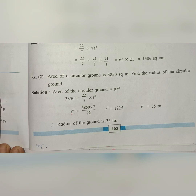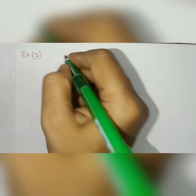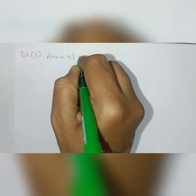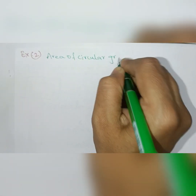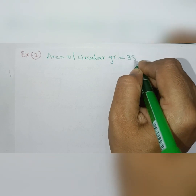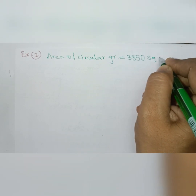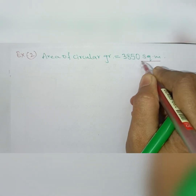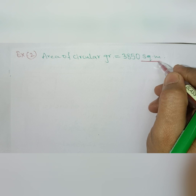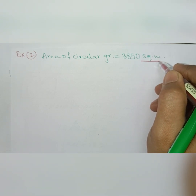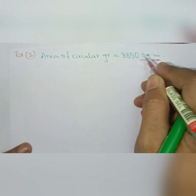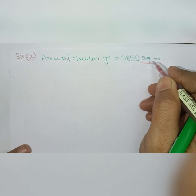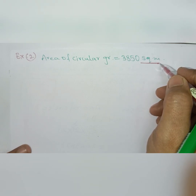We will first find r squared, then take the square root to get r. Never leave the answer as r squared — taking the square root is compulsory, because we are asked for r, not r squared. Now I will write the given information: the area of the circular ground is 3850 square meters. Note that the area is in square meters, so the radius answer must also be in meters, not centimeters — otherwise marks will be cut.